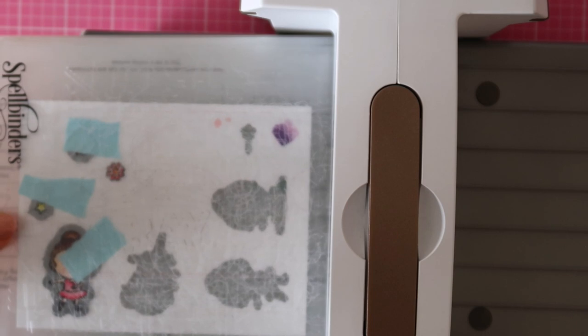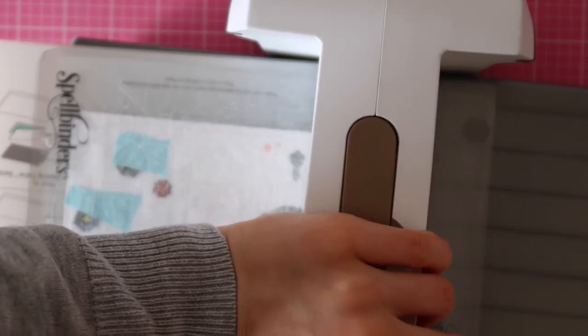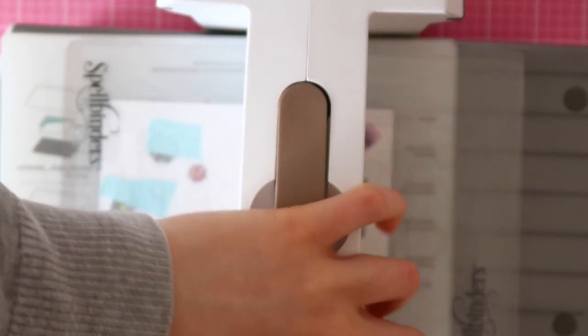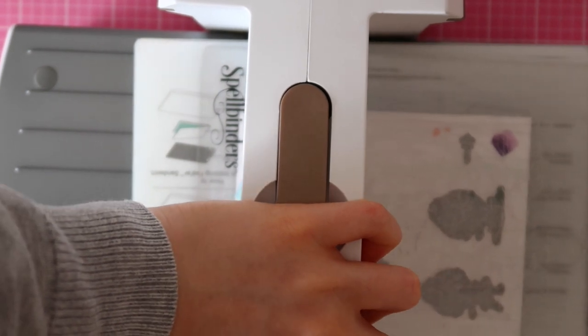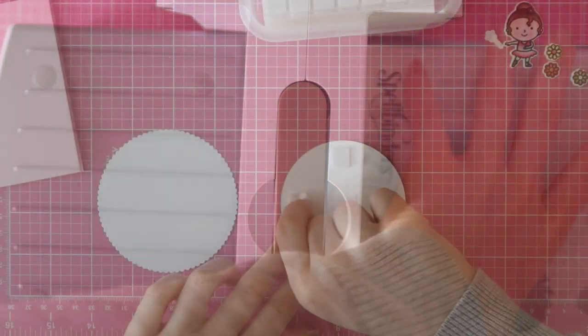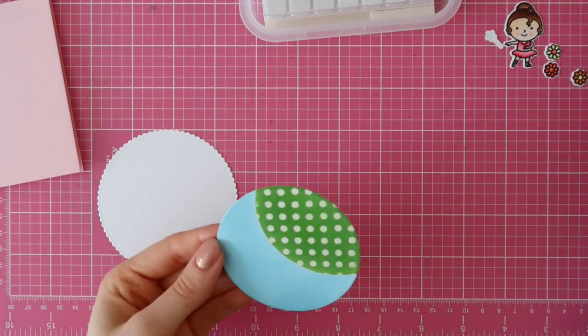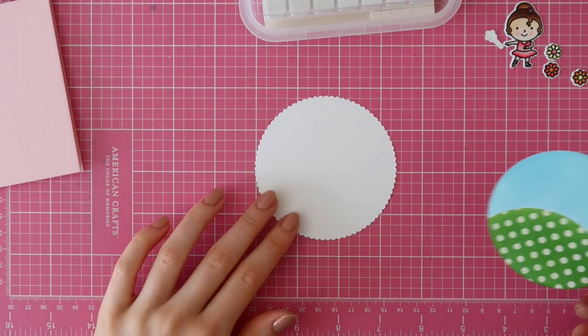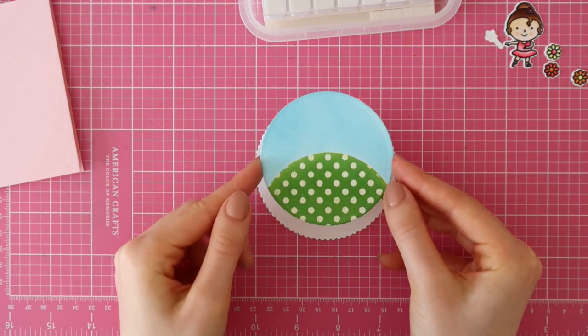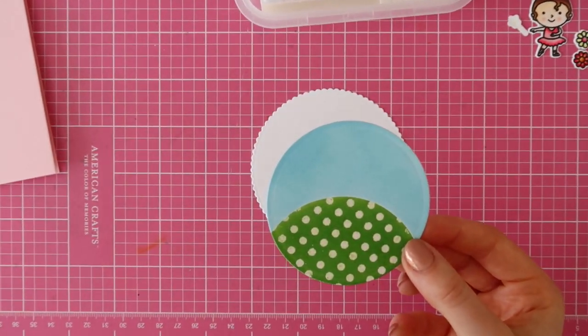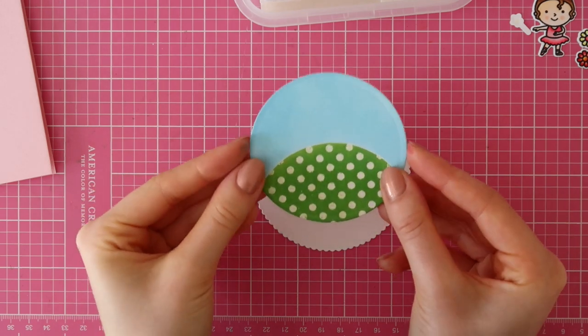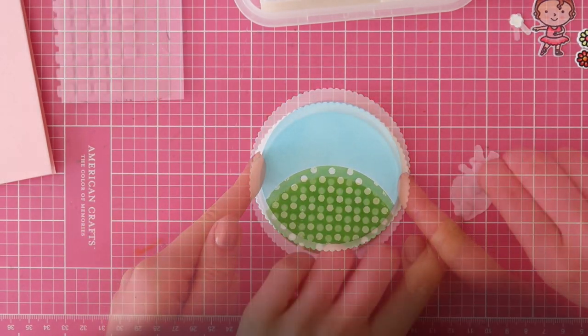Now that I colored all of these images, it's time to cut them out. I like to use the coordinating dice from the Tiny Dancers set. And I'm using my Spellbinders Platinum 6 die cutting machine to die cut them. I also die cut a wide scalloped circle and now I am adhering the masked and ink blended piece on this circle with some foam squares.